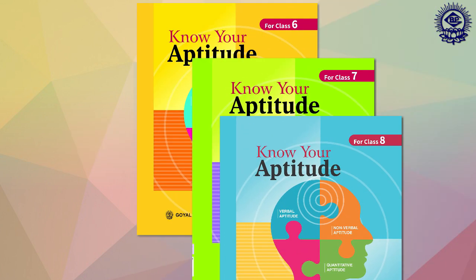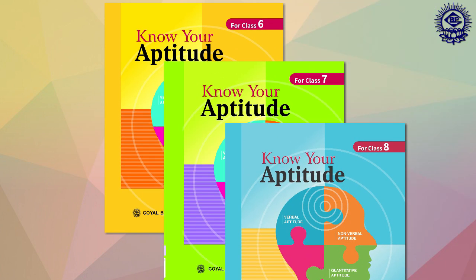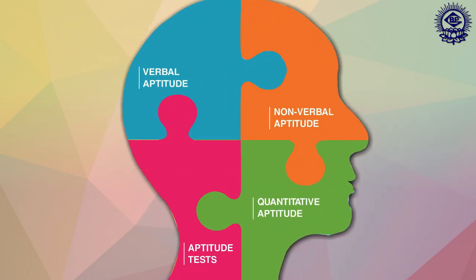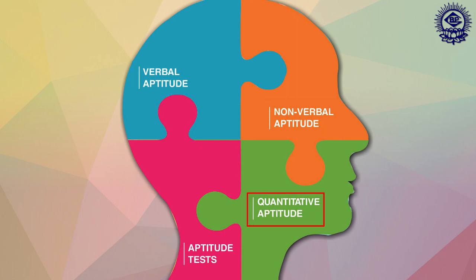Each book for classes 6 to 8 has been divided into four sections, namely verbal aptitude, non-verbal aptitude, quantitative aptitude, and aptitude tests.